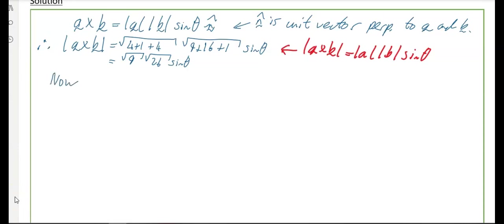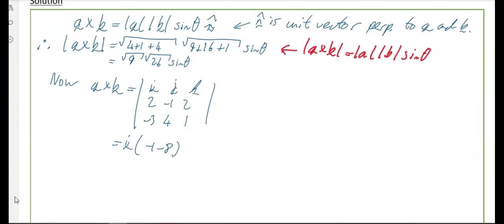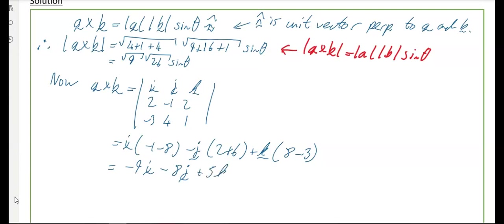So we need to work out a cross b using the 3×3 determinant. Second row is the coefficients of a: 2, minus 1, 2. Third row is the coefficients of b: minus 3, 4, 1. Working that out: i upon minus 1 minus 8, minus j upon 2 plus 6, plus k upon 8 minus 3. Tidying up: that's minus 9i, minus 8j, plus 5k.